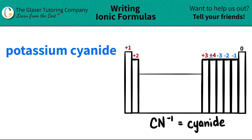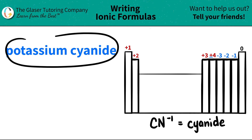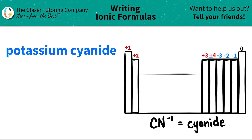Today, we are going to be writing the formula for the ionic compound potassium cyanide. So let's start from left to right. I have potassium here, and if I scan the periodic table, potassium is right here. Potassium is K, and it's a group one metal, so it's a plus one charge. So I'm going to write K being a plus one.